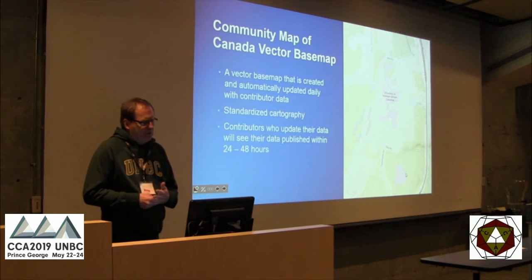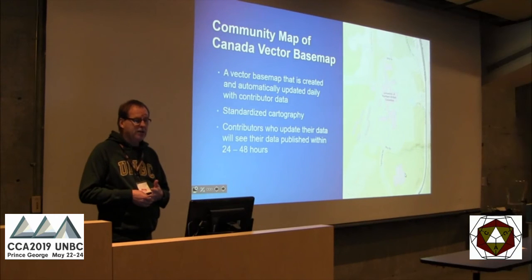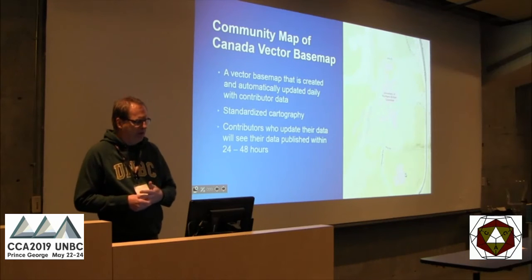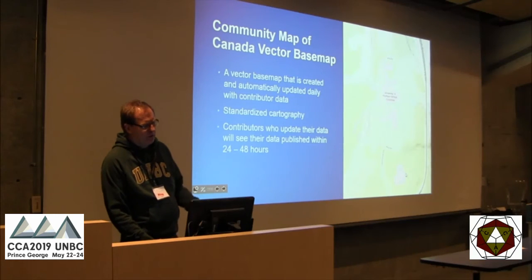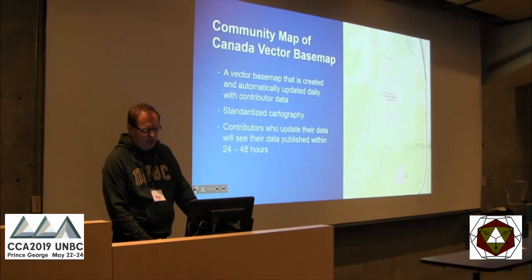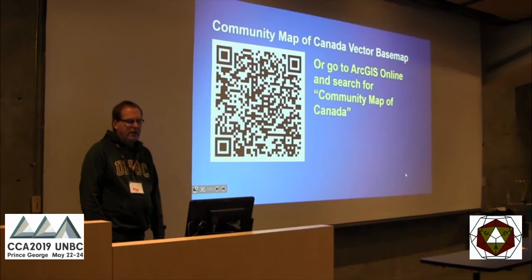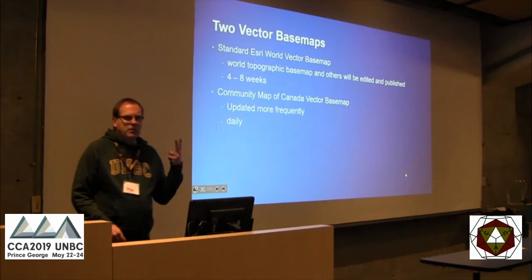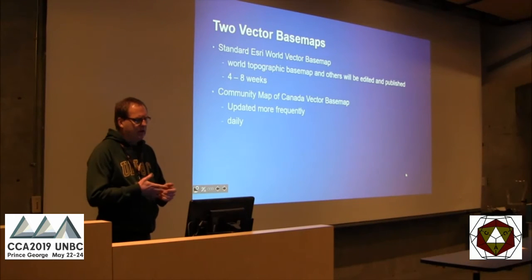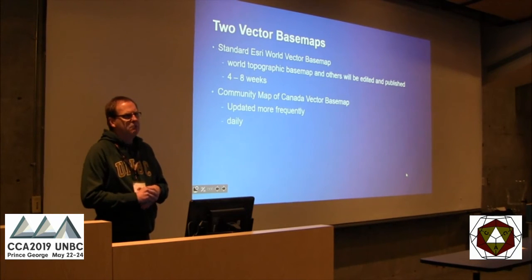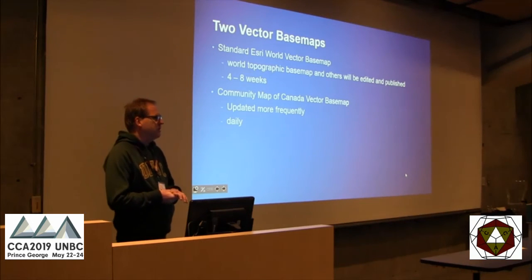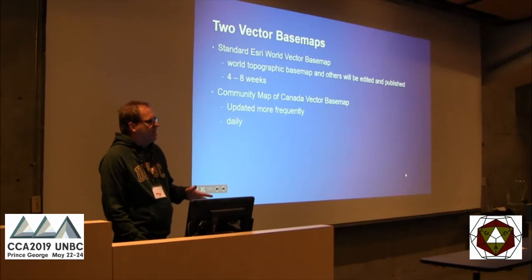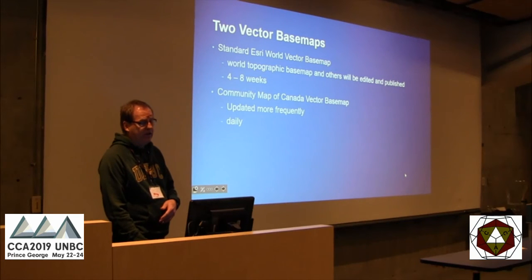So the community map of Canada vector base map is basically created automatically and is very much up to date. We've got standardized cartography so it looks like our raster topographic base map, but it is a vector base map. Anyone who is a contributor and updates their content will see their content update on the map within 24 to 48 hours. Here is a link to the community map of Canada vector base map, and you can also search for it on ArcGIS Online. Both vector base maps are stylizable.